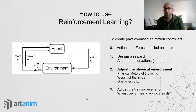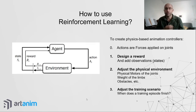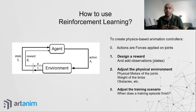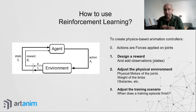You can use reinforcement learning as a tool without digging into the precise algorithms. For physics-based character animation, the actions are the forces applied on the joints. You need a reward and observations of the world state. The agent learns when to obtain the reward. You also need to adjust the physical environment and the training scenario — particularly when an episode ends and restarts.